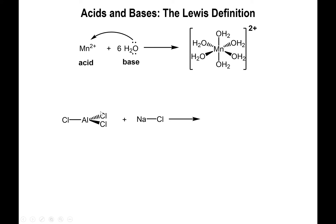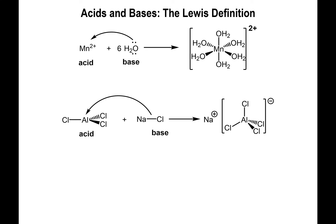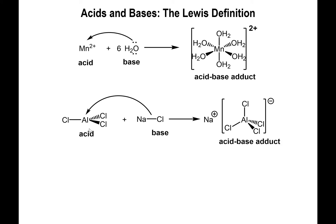Similarly, you could have aluminum chloride reacting with sodium chloride, in which case the chloride anion can attack the aluminum center, which is electron deficient. Because aluminum is accepting electrons, it is the acid by definition, and the chloride, which is donating the electrons, is the base. It's interesting to look at it this way, because you have never thought of chloride as acting like a base — but from the point of view of the Lewis definition, it's definitely doing just that. You form the tetrachloroaluminate complex, and like the manganese complex, it is known as an acid-base adduct.